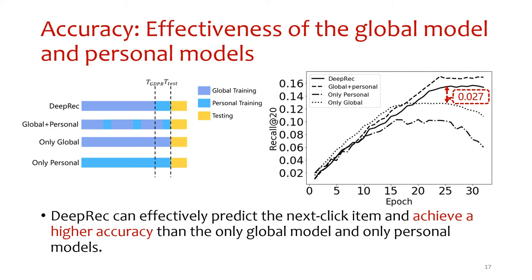Finally, the personal-only module trains a personal module for each user with only her own privacy-sensitive data. We show the learning curves of DeepBReath and baselines on the testing set. The personal-only module suffers poor accuracy because single-user training data are too few, causing the module to overfit and converge to a local optimum. DeepBReath performs better than the global-only module because it leverages both common click patterns of all users and each user's unique click pattern.